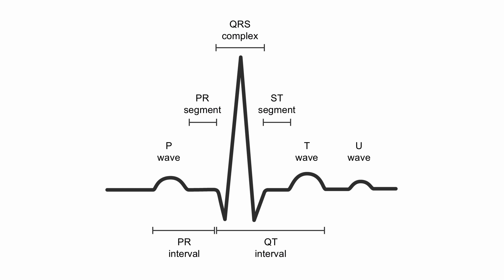In terms of the baseline, what's typically used for exercise stress testing is the PR segment. Let's review what that is. Here's our P wave, and it's very easy to see where the P wave ends — though that's not always the case. Where the P wave ends is where the PR segment begins. Where the QRS begins is where our PR segment ends. So this is our PR segment right here, and this is our baseline, and this should be at roughly the same level as our ST segment.